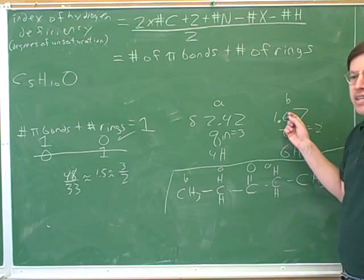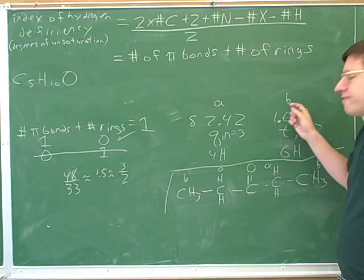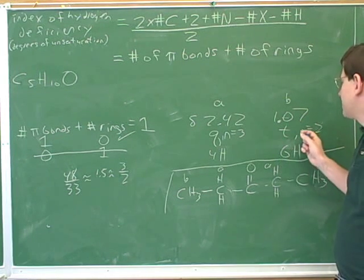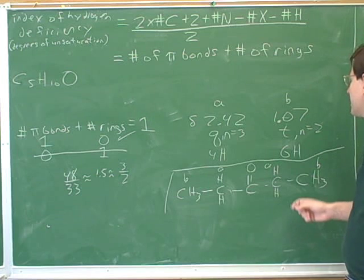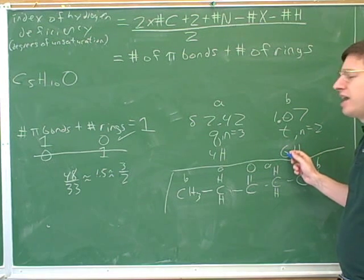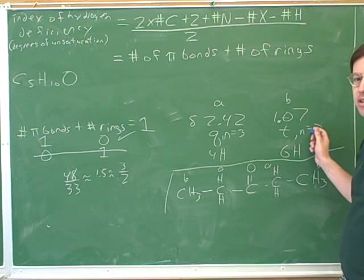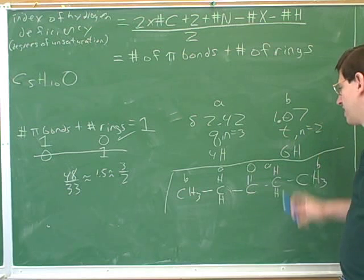And then I took each of these peaks separately and I started by not trying to connect them. I just tried to write down what fragments they represented. Notice how useful it was to have this n number, because here we said this doesn't just look like it represents a methyl—two methyl groups—it represents methyl groups adjacent to two hydrogens. So this is where we use that spin-spin splitting as a trick here.